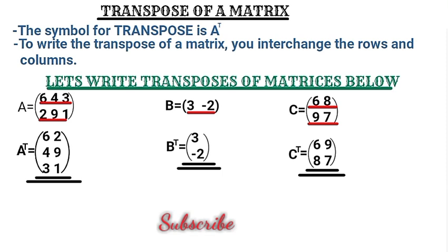When you look at this square matrix, six occupies the same position in both the original and the transpose, and seven also occupies the same position. Only eight and nine have swapped places — nine which was on top has moved, and eight which was in another position has also swapped. This is how you write the transposes of matrices.